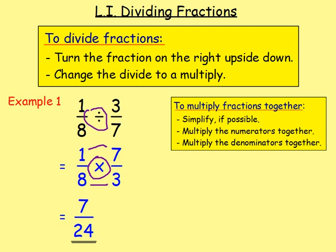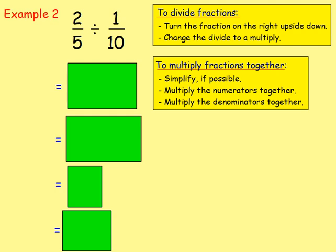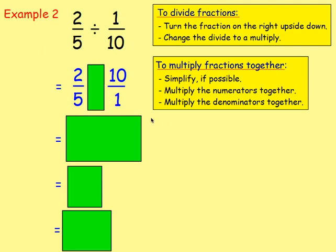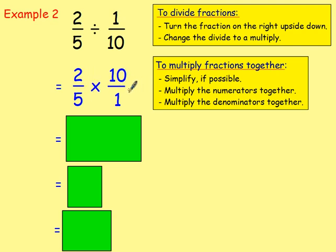Example 2: we have 2 fifths divided by 1 tenth. The first thing we want to do — because we are dividing the fractions — is turn the fraction on the right upside down. So 2 fifths will stay as 2 fifths, and we change 1 tenth to 10 over 1. When you do that, the divide sign goes to multiply. We are now back to multiplying fractions. 2 fifths doesn't simplify; 10 over 1 again doesn't simplify on its own.